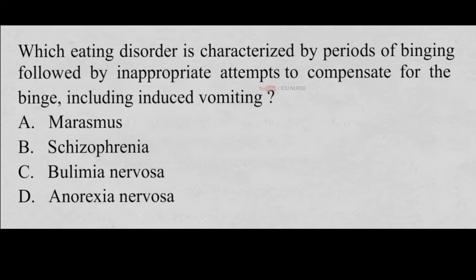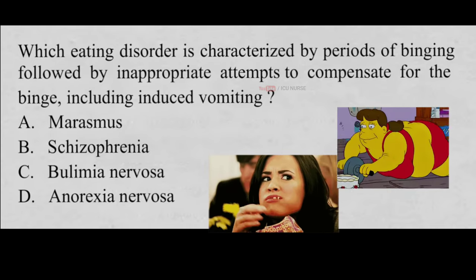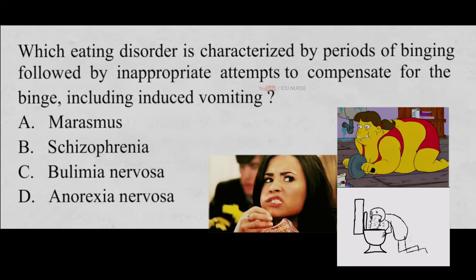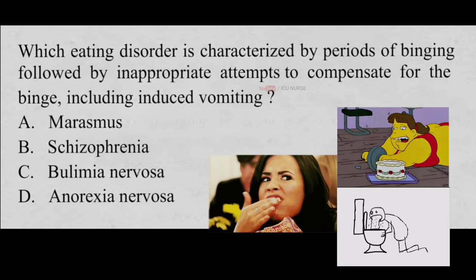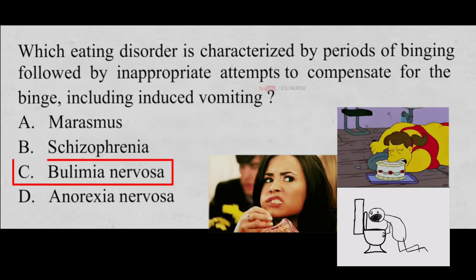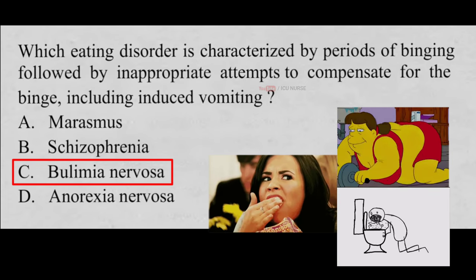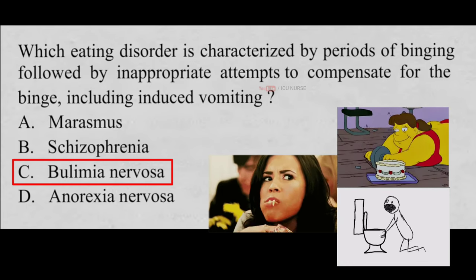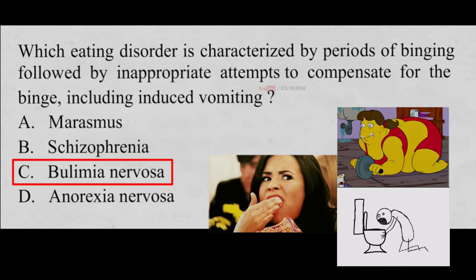Which eating disorder is characterized by periods of binging followed by inappropriate attempts to compensate for the binge, including induced vomiting? A. Marasmus, B. Schizophrenia, C. Bulimia nervosa, D. Anorexia nervosa. And the correct answer is C, Bulimia nervosa. Bulimia nervosa is an emotional disorder characterized by a distorted body image and an obsessive desire to lose weight, in which bouts of extreme overeating are followed by fasting or self-induced vomiting.